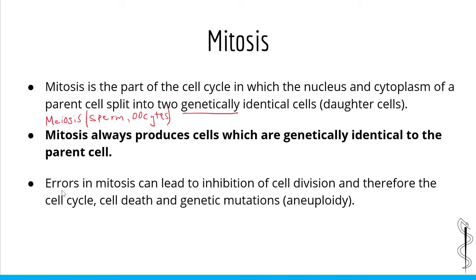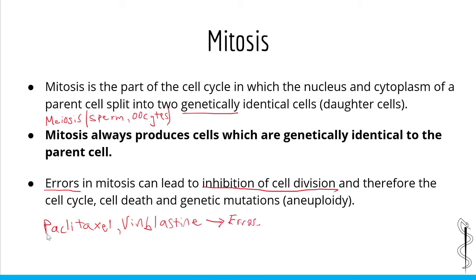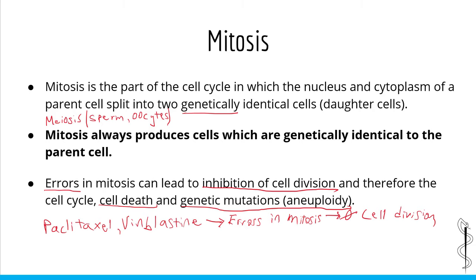Errors in mitosis can lead to one of three consequences. First, it can lead to inhibition of cell division and therefore the cell cycle — this is the principle behind antineoplastic drugs such as paclitaxel and vinblastin. These drugs create errors in mitosis which cause the entire cell cycle to stop and therefore halt tumor growth. Errors in mitosis can also lead to cell death, which explains why these drugs can also kill cancer cells. Lastly, errors in mitosis can lead to genetic mutations such as aneuploidy, which is when the cell has an incorrect number of chromosomes.